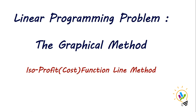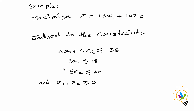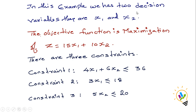In this video I am going to discuss the linear programming problem graphical method with ISO profit or cost function line method. This is an example which I am going to use for discussing the ISO profit function. In this example we have two decision variables X1 and X2. The objective function is maximization of Z, where Z is equal to 15X1 plus 10X2.